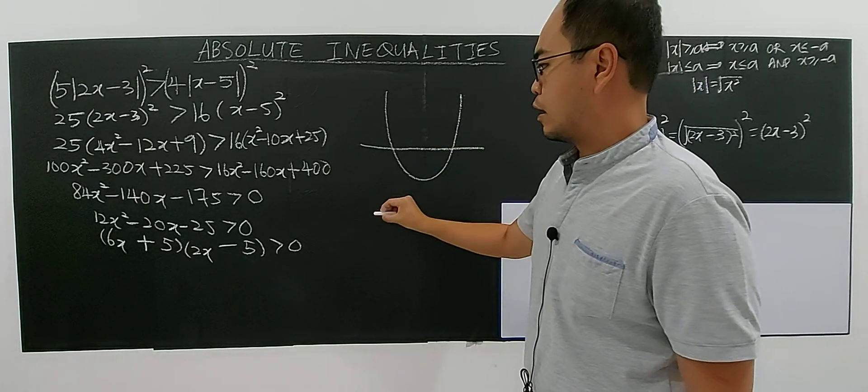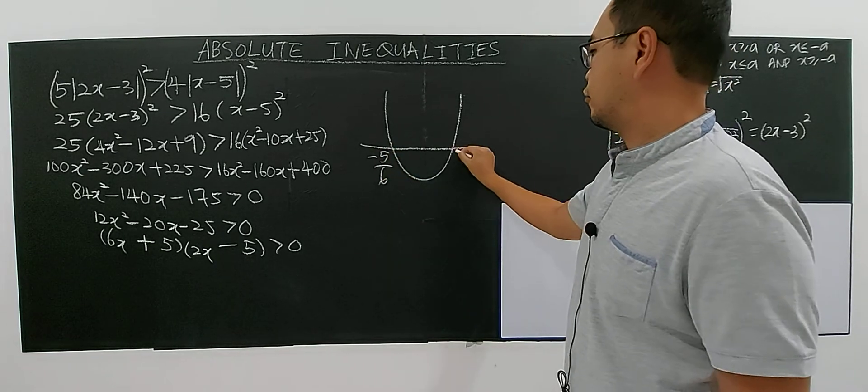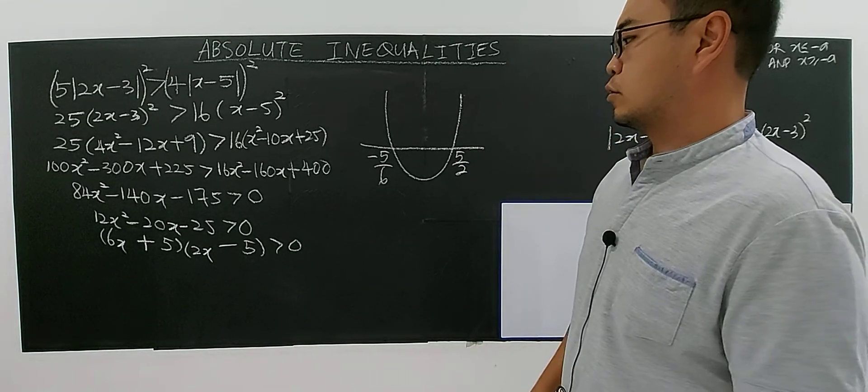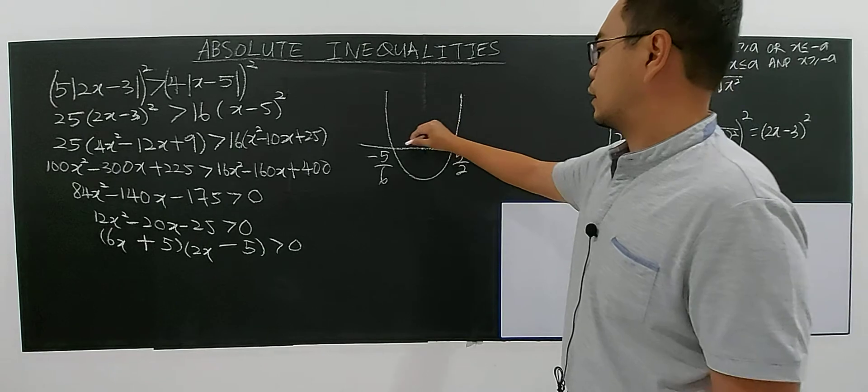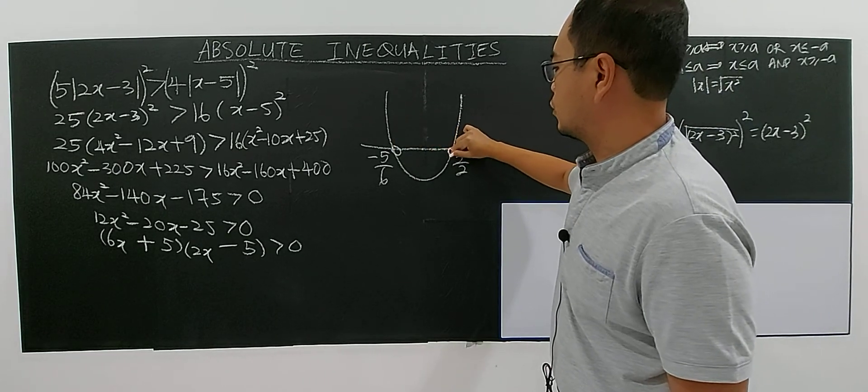So you sketch. You have negative 5 over 6 and 5 over 2. This is empty circle, not included.